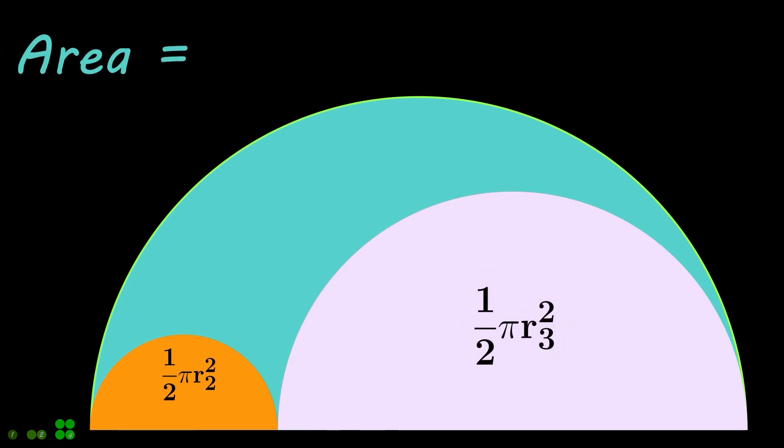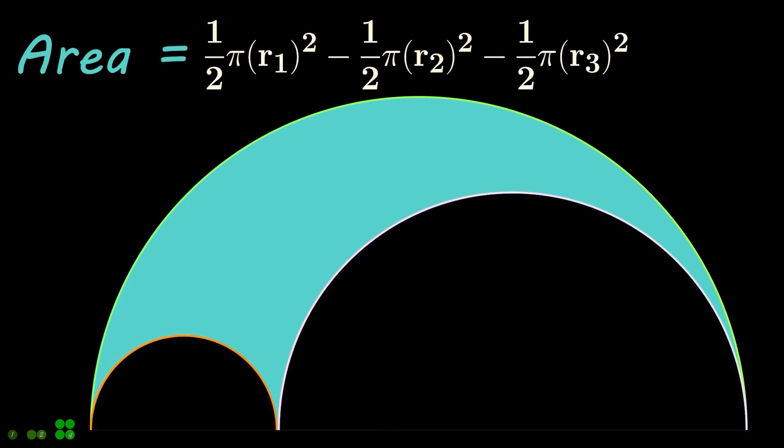For the area of the Arbelos, subtract the area of semicircles with radii R2 and R3 from the outer semicircle and simplify the equation.